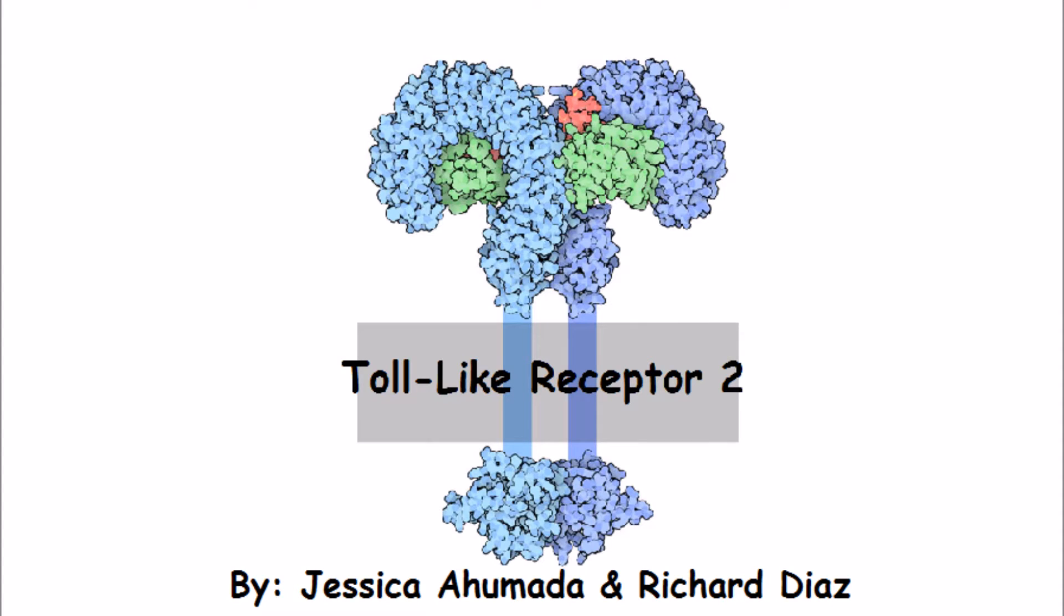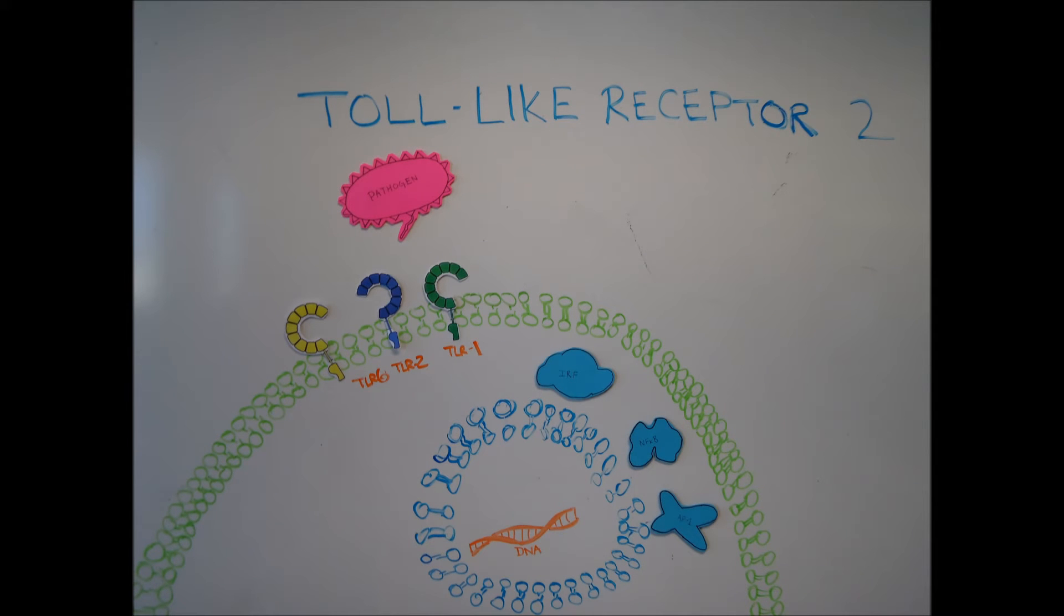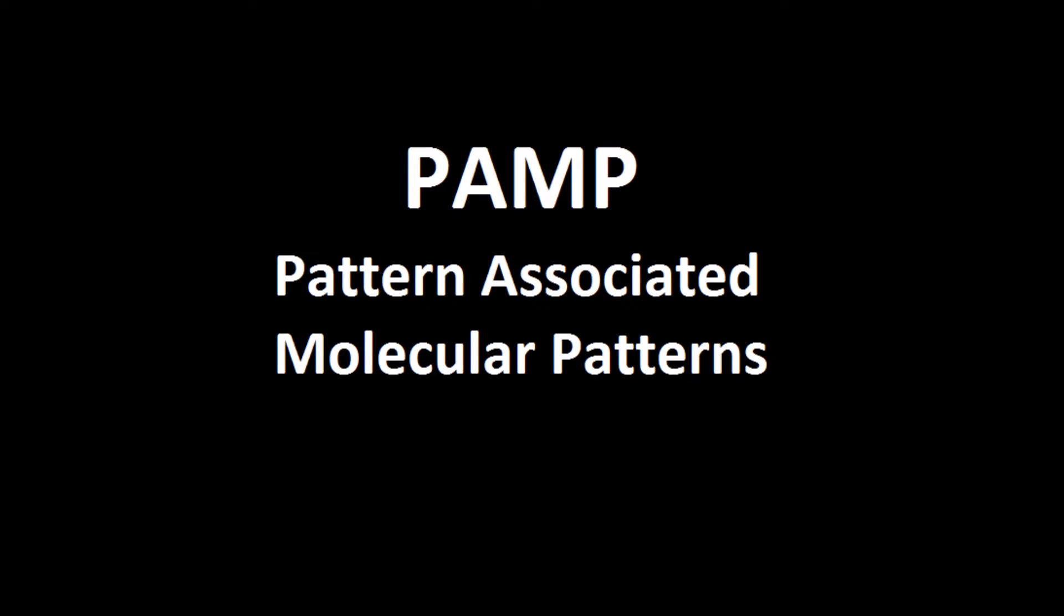This is Toll-like Receptor 2 by Jessica Almada and Richard Diaz. There are 10 expressed TLR genes in humans. Each TLR is devoted to recognizing a distinct set of molecular patterns that are not found in healthy vertebrate cells. These patterns are called PAMP, pathogen-associated molecular pattern.